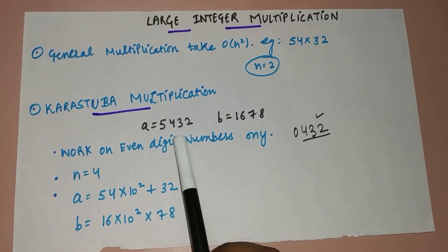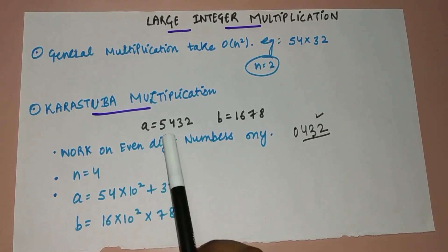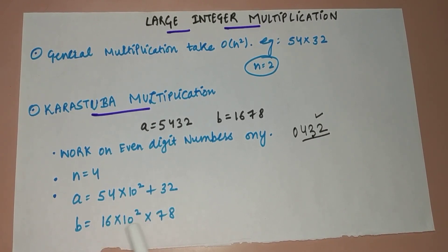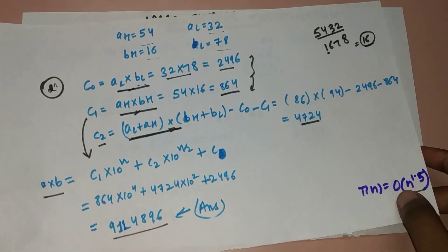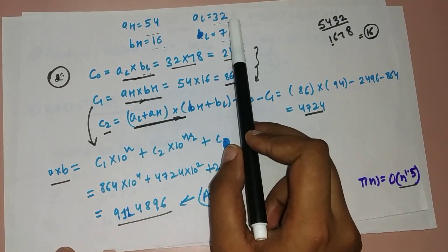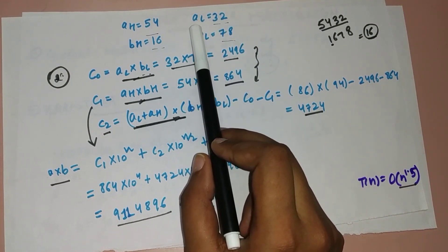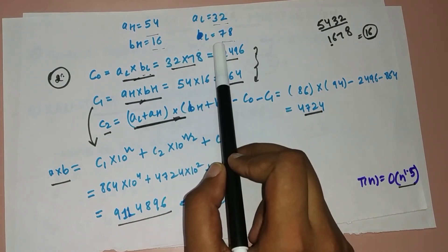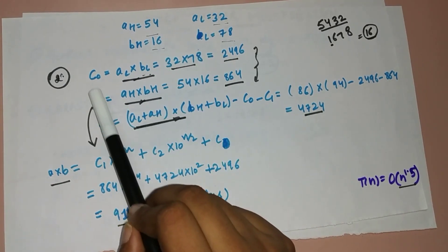Basically, a will be expressed like this and b will be expressed like this. From here I can compute that my a_high will be 54 and a_low will be 32, because I have divided the a number into complete halves. Similarly, my b_high will be 16 and b_low will be 78.